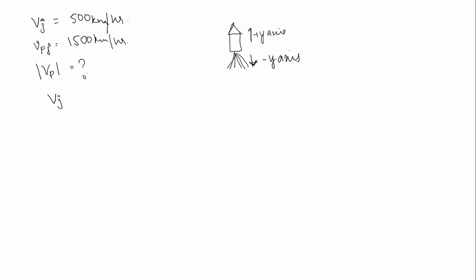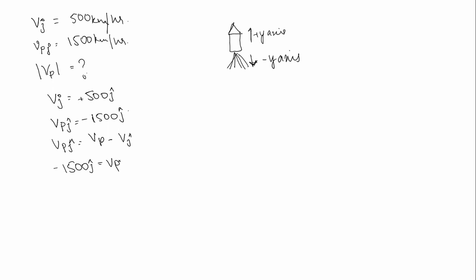So velocity of jet is equal to plus 500 j cap, and velocity of products with respect to jet is equal to minus 1500 j cap. We know velocity of product with respect to jet equals velocity of product minus velocity of jet. So minus 1500 j cap equals velocity of product minus 500 j cap.